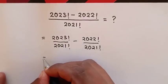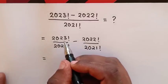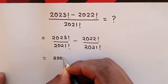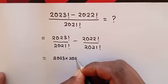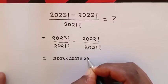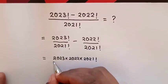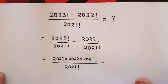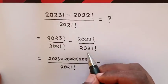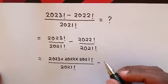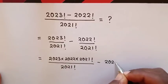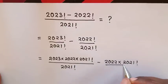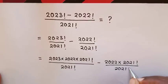This will be equal to — from here, 2023 factorial over 2021 factorial: 2023 factorial is the same as 2023 times 2022 times 2021 factorial, over 2021 factorial. Minus: 2022 factorial over 2021 factorial is the same as 2022 times 2021 factorial, over 2021 factorial.